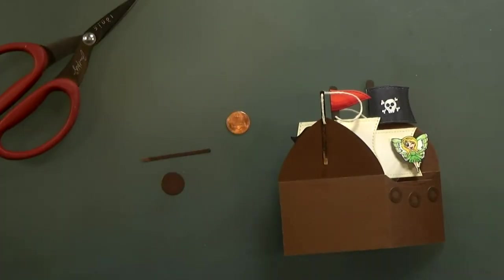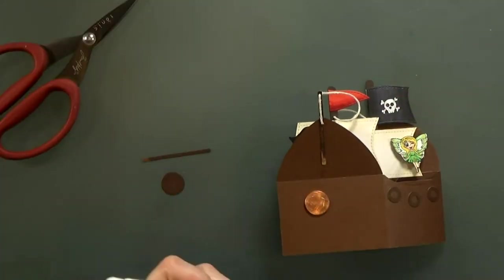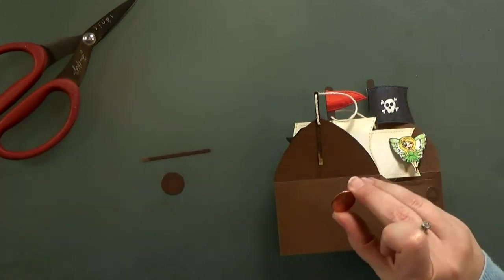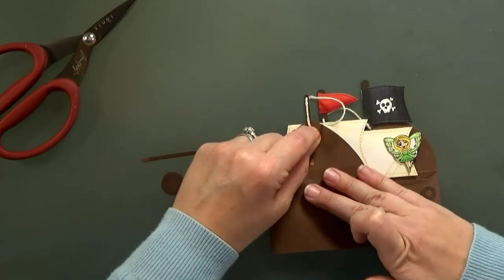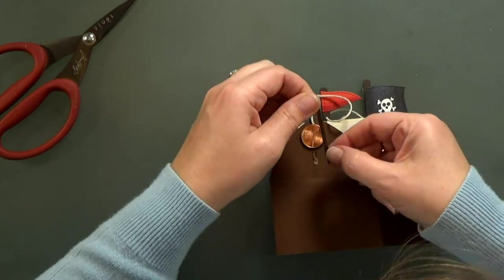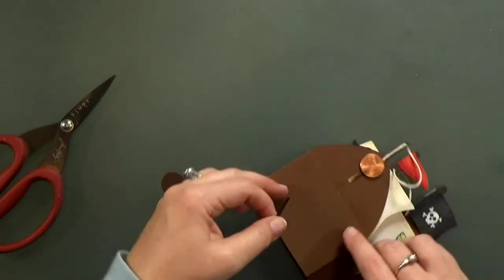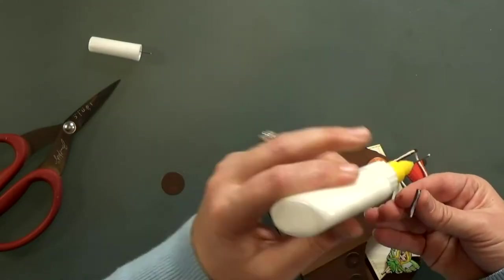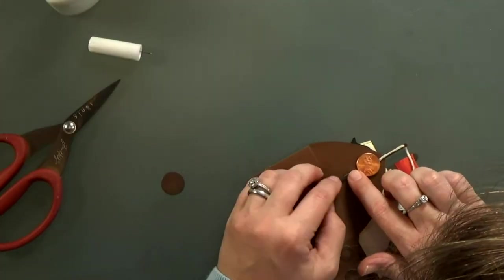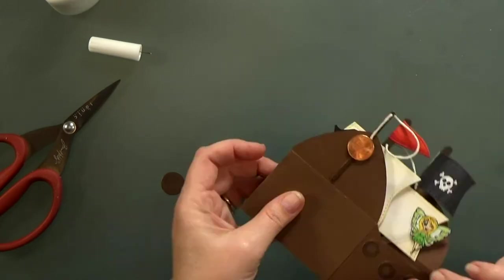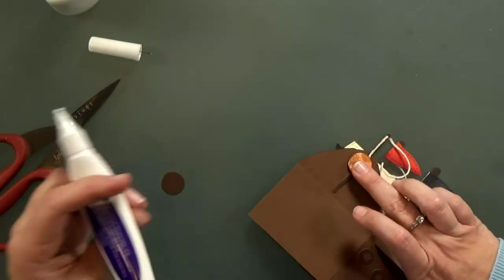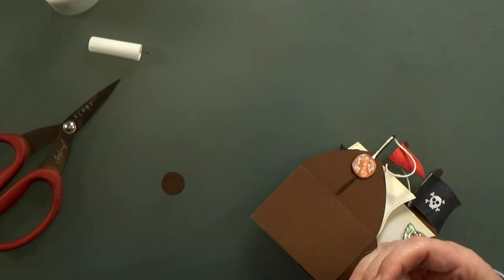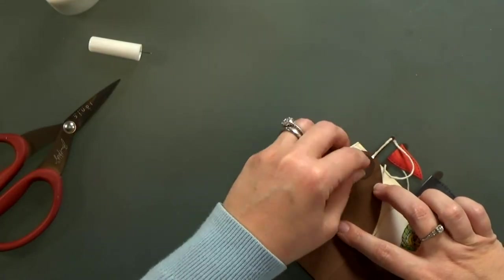I decided that the bow wasn't staying down as low as I wanted, so I wanted to weigh it down. I peeled back the string a little bit and I decided to glue a penny in place. I'm going to add another little bowsprit layer to replace the one I peeled off when I pulled back the string. Then I'm going to cover the penny with a paper circle. This is just going to add enough weight to pull the string taut when the card is open.